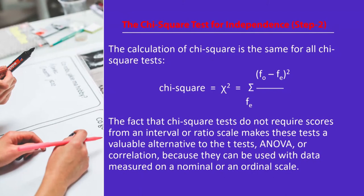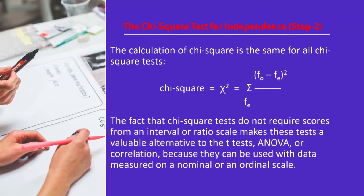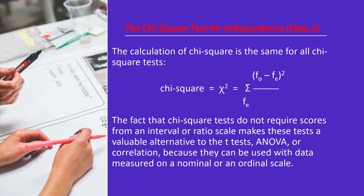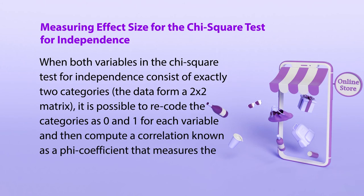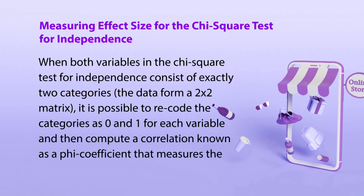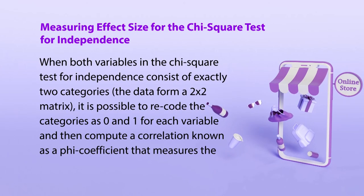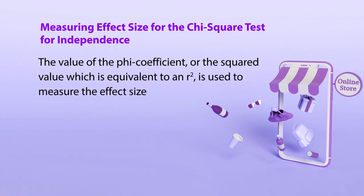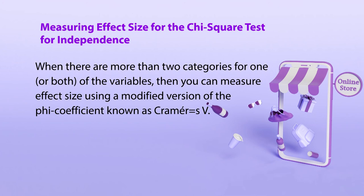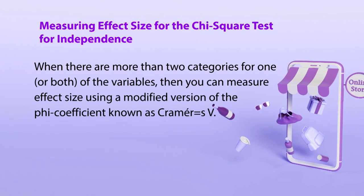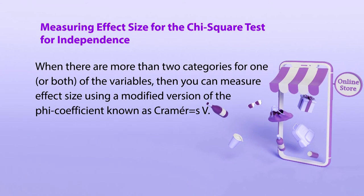Chi-square tests do not require scores from an interval or ratio scale, making them a valuable alternative to ANOVA or correlation because they can be used with data measured on a nominal or ordinal scale. When both variables in a Chi-square test for independence consist of exactly two categories — forming a 2×2 matrix — it is possible to recode the categories as 0 and 1 and compute a PHI coefficient that measures the strength of the relationship. The value of PHI, or its square (equivalent to R²), measures effect size. When there are more than two categories, effect size is measured using Cramer's V, evaluated similarly to a correlation.